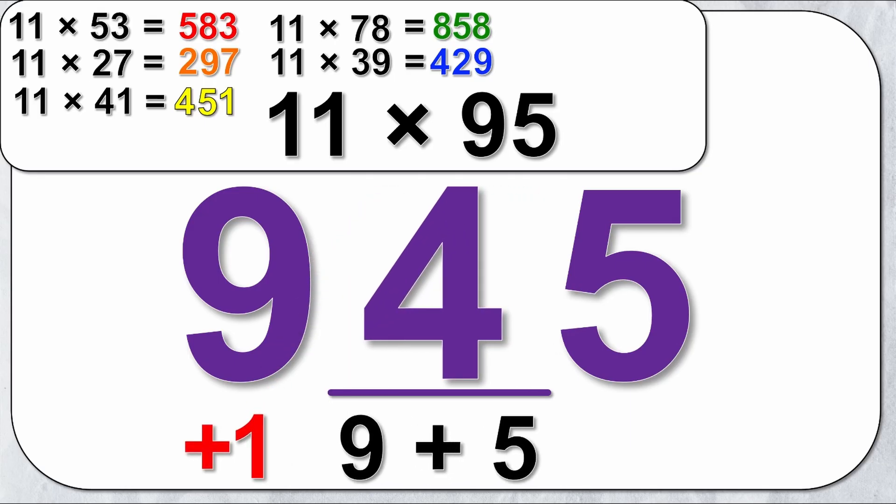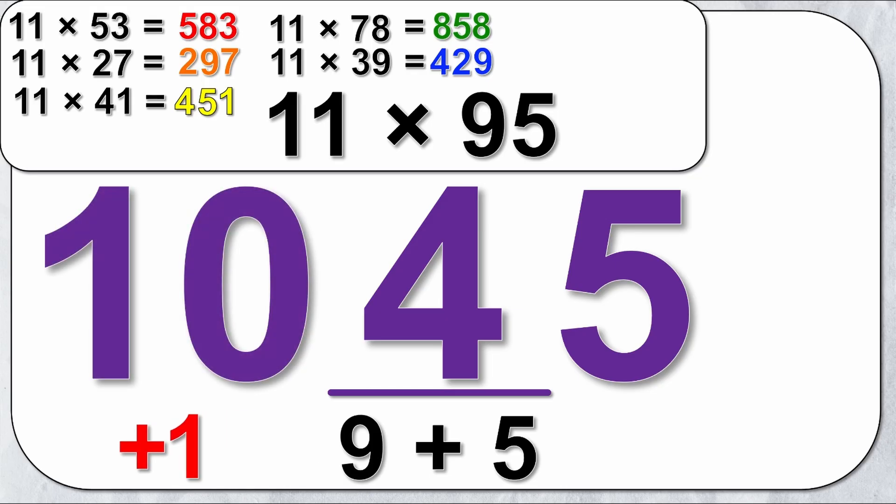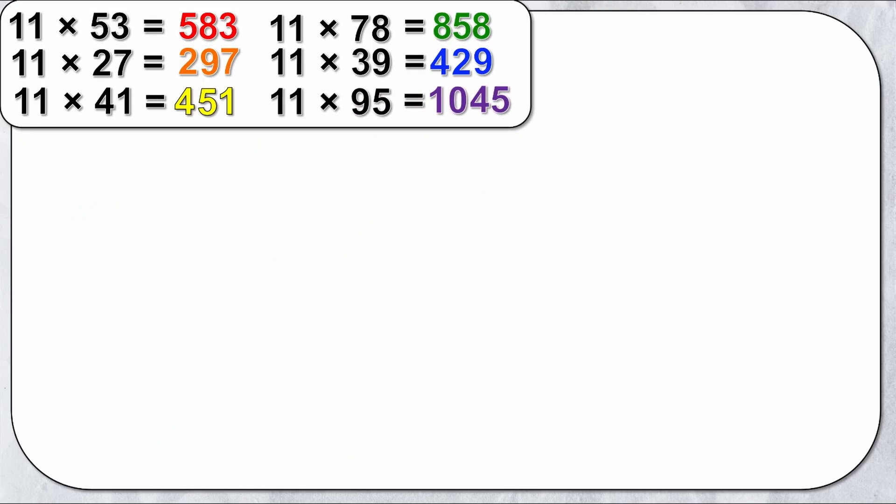The 1 is going to be carried to the front and the 4 stays in the middle. 9 plus 1 is 10. So my answer is 1045. So now that you have all of these examples, let's try a couple and see if you can actually solve it faster than you can type it into a calculator.